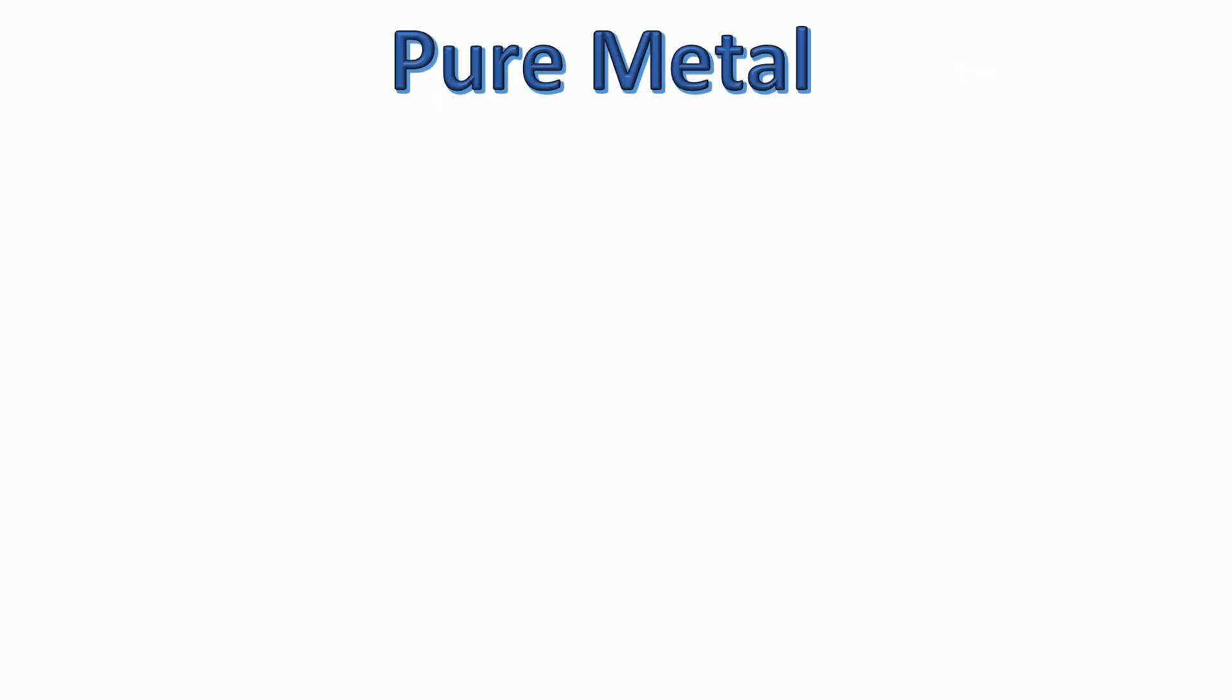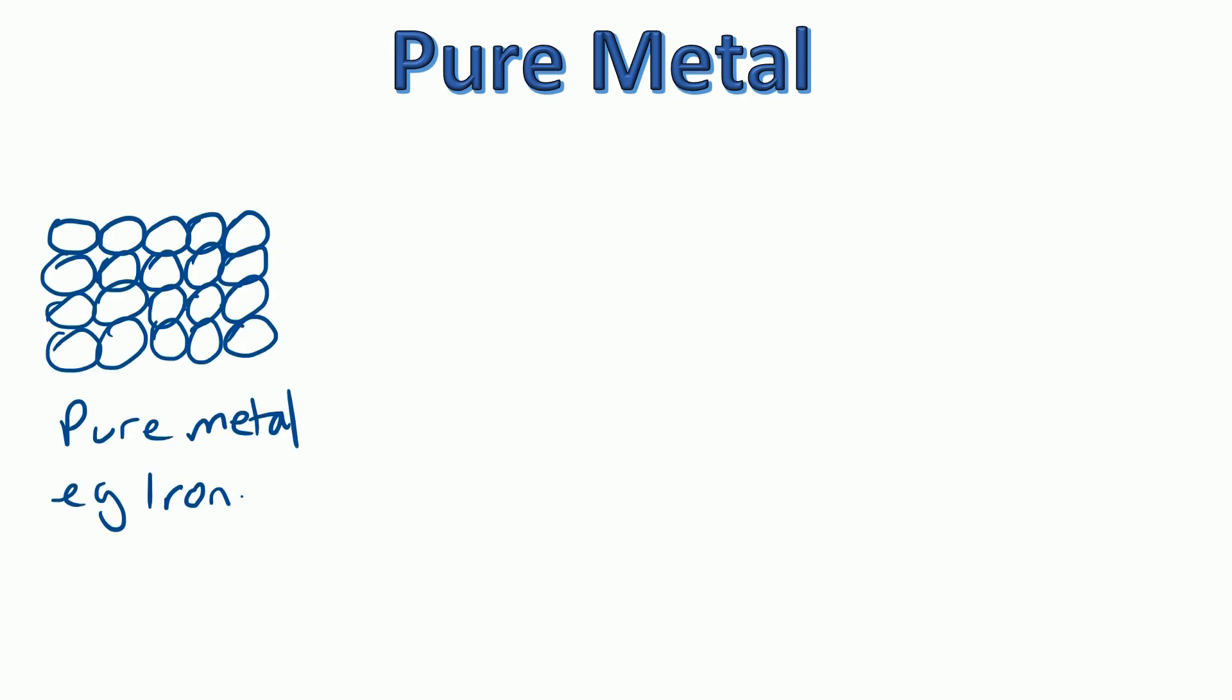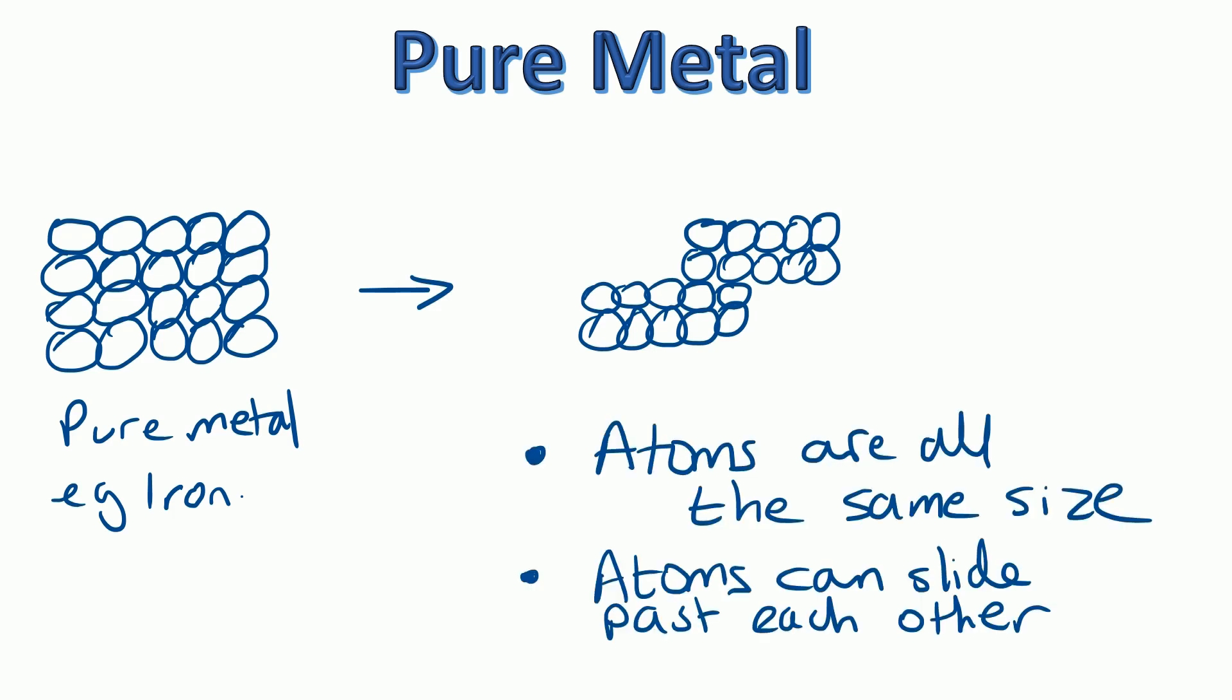Let's have a look at the arrangement of atoms in a pure metal. If you think about the pure metal we've just seen, which is iron, the atoms in the iron are all the same size. It's an element, so it's made of the same type of atom. That means they're all the same size. So when you try and break the metal, the atoms can slide past each other.